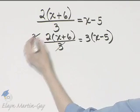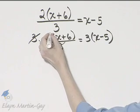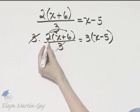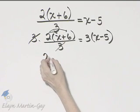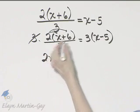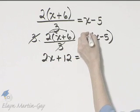Now, the left side, the 3's divide out like we want, and I'll go ahead and use the distributive property. 2 times x is 2x plus 2 times 6 is 12 is equal to,